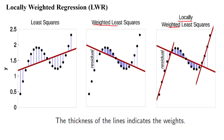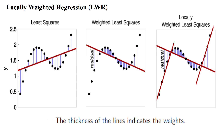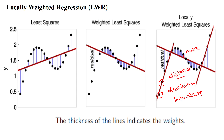In locally weighted least squares, the data points which are local — near to the testing data point — get more weightage. If the testing data point is in a certain area, the predicted values close to that decision boundary get more weightage, while data points far from the decision boundary get less weightage. This is the key difference between the three regression approaches: least squares, weighted least squares, and locally weighted least squares, where the distance metric plays a major role.